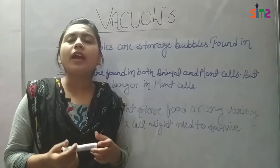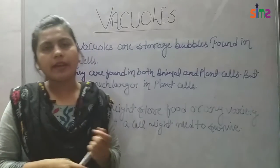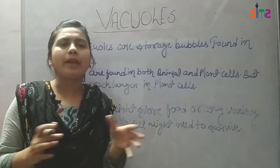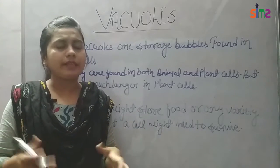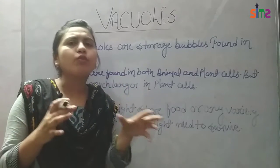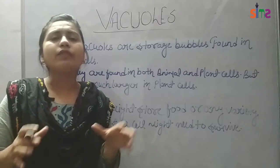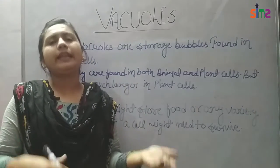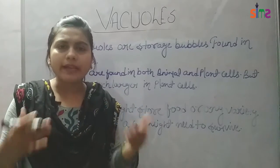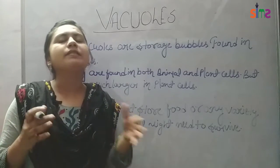Why are vacuoles larger in plant cells? Plants cannot move — they are stored in a place. They store nutrients. Because plants cannot move to get nutrients or other materials, for the needs of these plants the vacuoles are prominent and large in size.